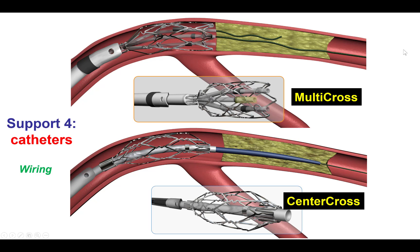The fourth way to obtain strong support is to use a support catheter such as the Multiscross and the Centercross. These catheters have a nitinol loop that goes against the vessel wall and provides strong support. They are most commonly used for crossing chronic total occlusions.